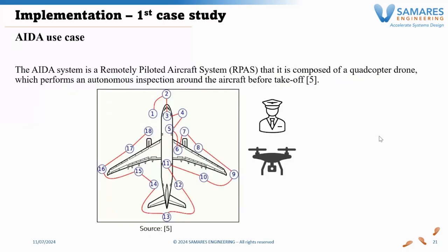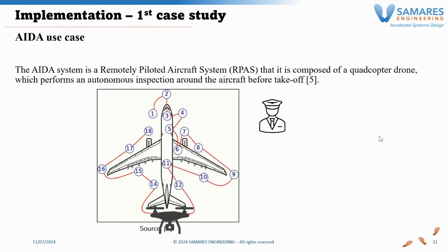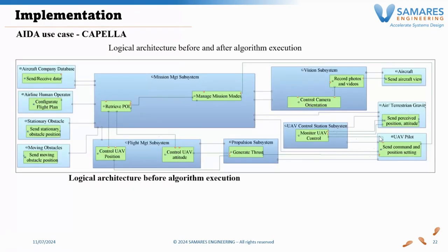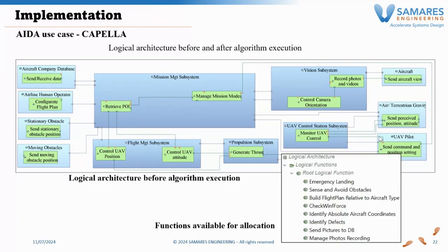Now we present the first use case where we implement our approach: the IDA use case. IDA is a public use case from ERTS. This system has a mission to inspect the aircraft before takeoff, as shown in this animation. Now we pass to the live demo to show it in the Capella model.